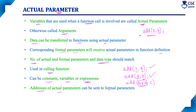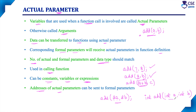Addresses of actual parameters can also be sent to formal parameters. For example, add(&a, &b). The ampersand symbol represents the address of variable 'a', and it refers to the value stored at that memory location. If you are sending addresses like this, then in the formal parameter, it should be declared as a pointer variable, because the pointer refers to the value stored at that address.